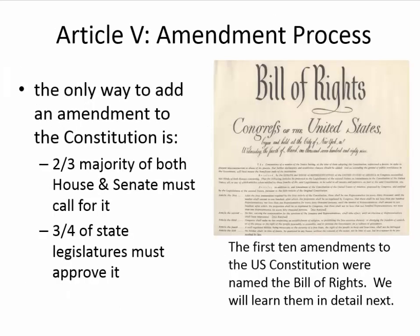Article 5 addressed the amendment process. The only way to add an amendment to the Constitution is a two-thirds majority vote of both the House and the Senate, and three-quarters of the state legislatures must approve. The first ten amendments to the Constitution are called the Bill of Rights, which will be covered in great detail in an upcoming lesson.